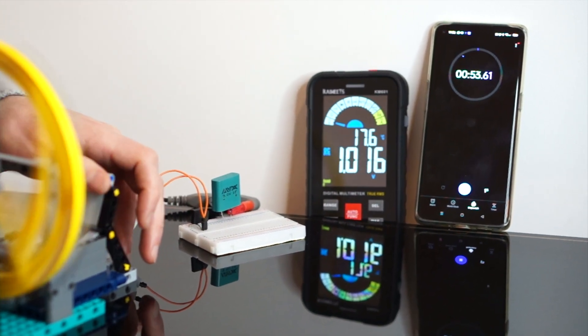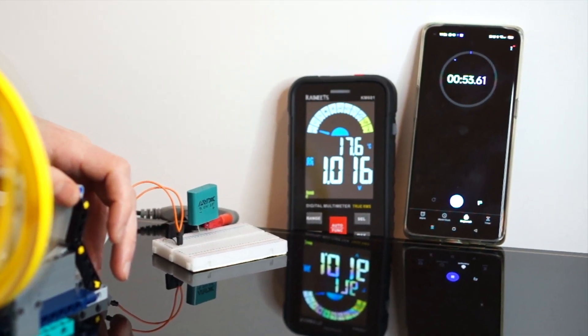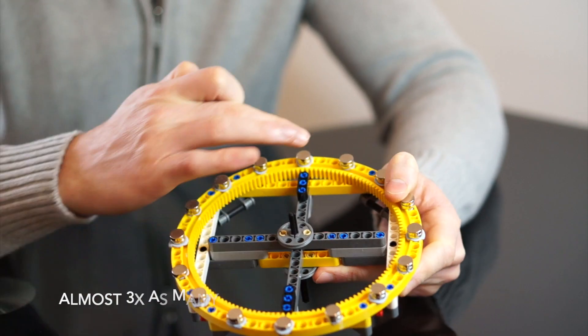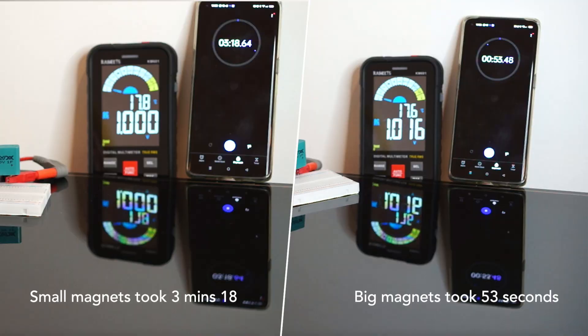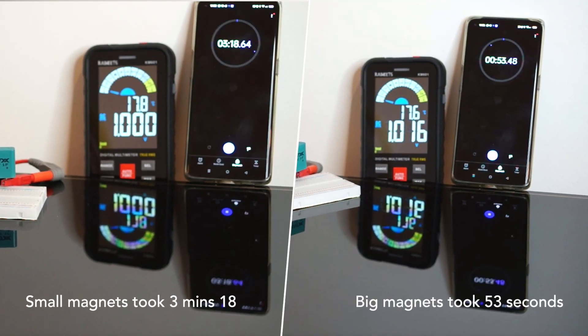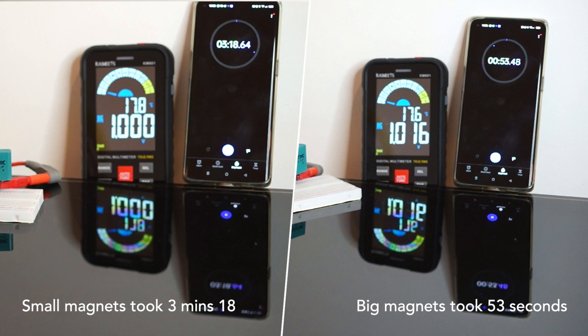Okay so this time it took 53 seconds which is a lot quicker. So as you can see even though there are almost 3 times as many magnets on the smaller magnet wheel these larger ones are able to generate a much greater output per unit time at the same speed.